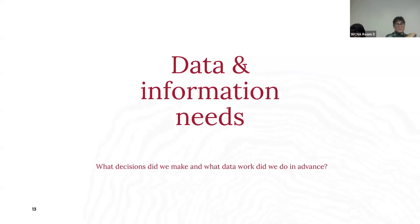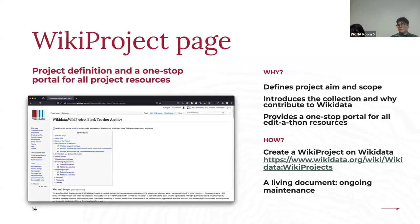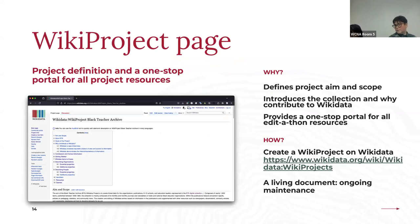Pre-edit-a-thon: these are the deliverables. The Wiki project page was one of the first things we created and started working on. It defines the project aim and scope, describes the collection focus, and crucially becomes a one-stop portal for all edit-a-thon resources. The Wiki project page is a work in progress throughout the entire process — it's not a one and done. If it's meant to serve as a one-stop resource, it's continually evolving. The language can be continually refined, and data and documentation can be continually added and updated as you work on them.